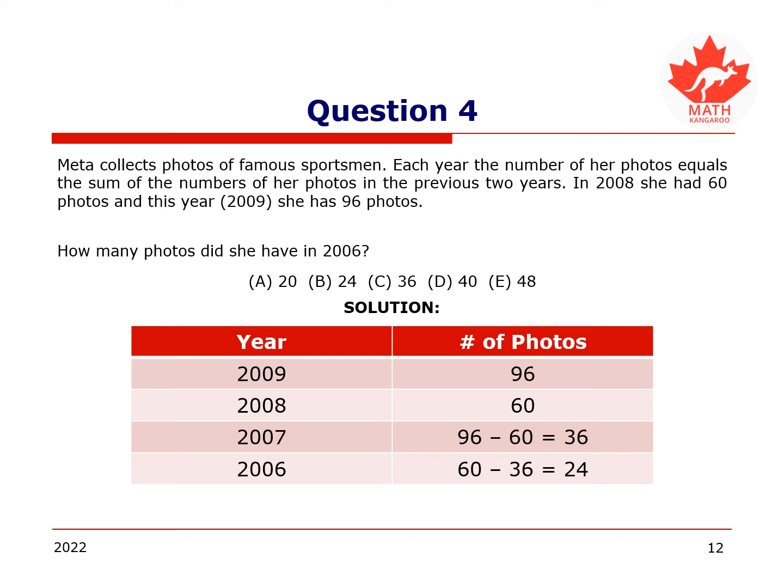We continue in a similar fashion for the photos in 2008. Photos in 2008 equals photos in 2007 plus photos in 2006. Then, 60 equals 36 plus photos in 2006. Therefore, photos in 2006 equals 60 minus 36, which equals 24 photos for the year 2006. Hence, the number of photos Meta had in 2006 is B, 24.